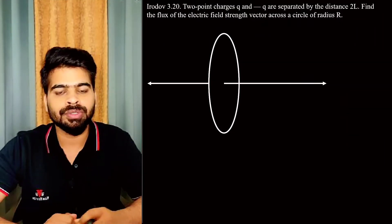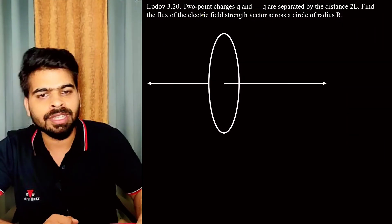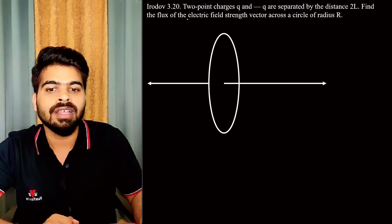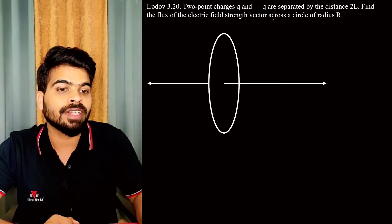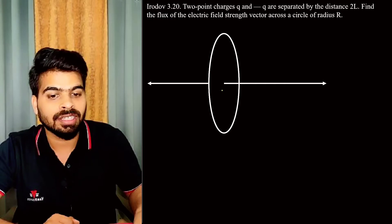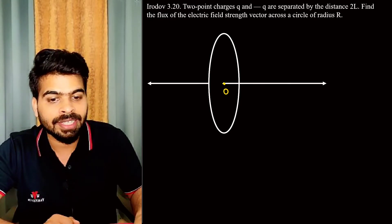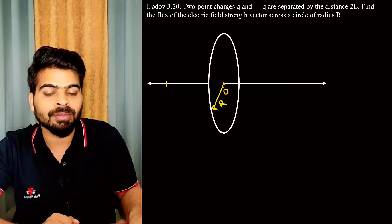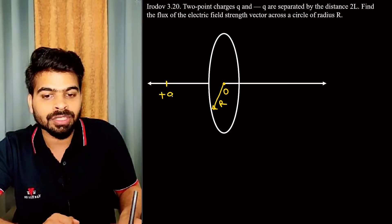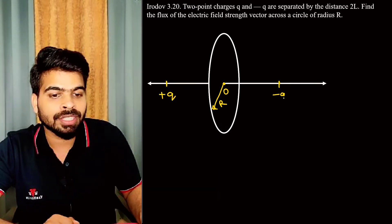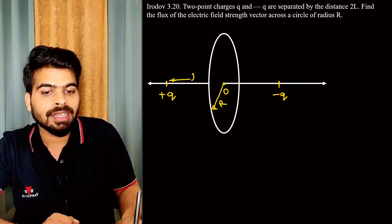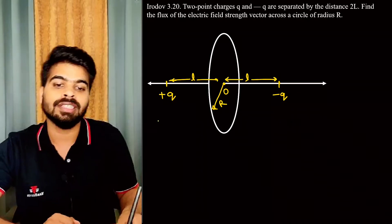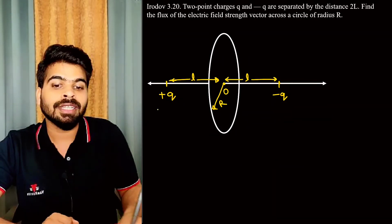Problem number 3.20: two point charges q and minus q are separated by distance 2l. Find the flux of the electric field strength vector across the circle of radius r. The circle has radius r, and the two charges — plus q and minus q — are placed at equal distances, at distance l from the center of this circle.